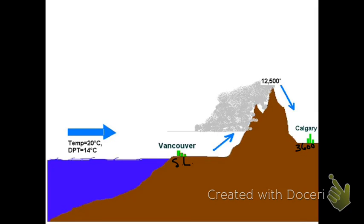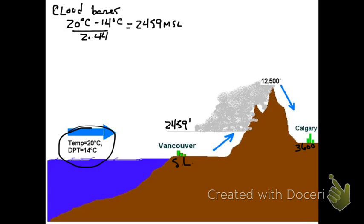In our scenario, we assume Vancouver is at sea level and Calgary is at 3,600 feet. The temperature from the sea breeze is 20 degrees Celsius with a dew point of 14 degrees Celsius. First, we calculate the base of the clouds using the formula: temperature minus dew point divided by 2.44, which gives us 2,459 feet MSL for the cloud bases.